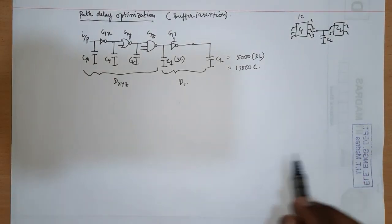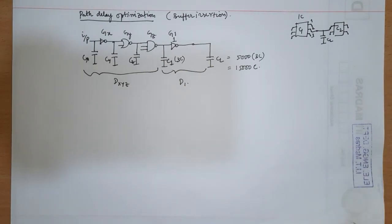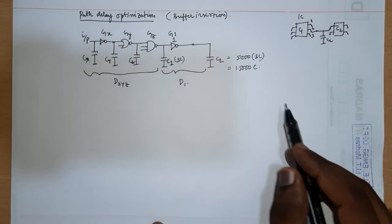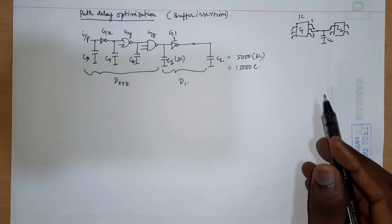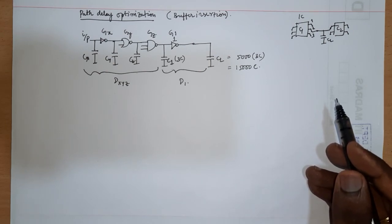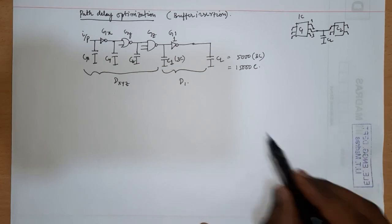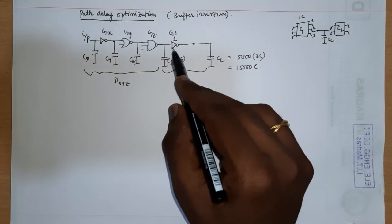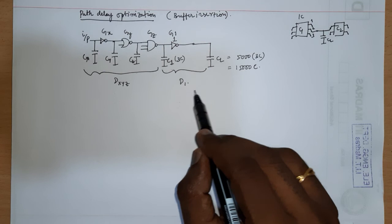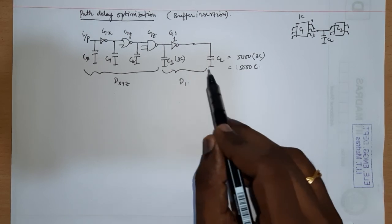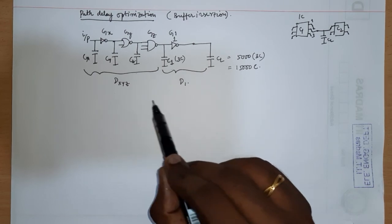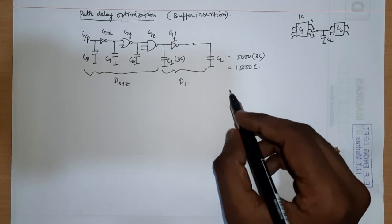This is a realistic situation. In such cases, the gates xyz are on-chip and their capacitances are also on-chip, so the delay dxyz will not be very large. But gate one — the last gate — is going to drive a large capacitor CL, so its delay D1 might be comparatively larger than dxyz. It makes sense to analyze D1 separately.